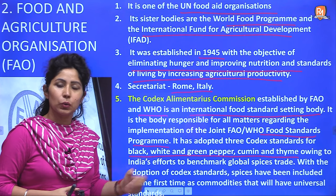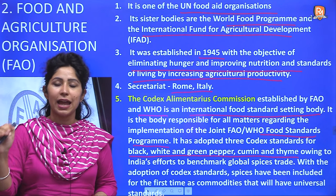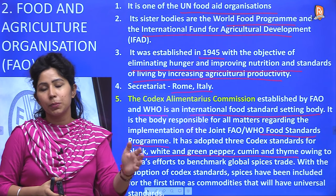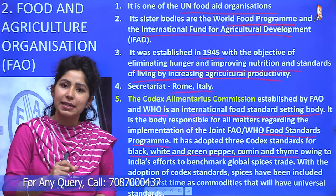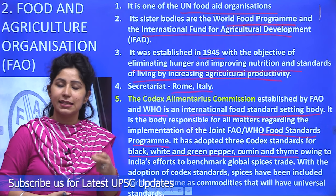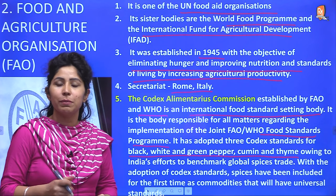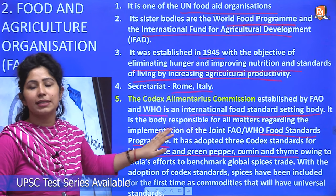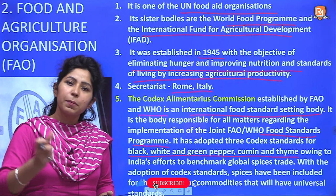The Codex Alimentarius Commission sets standards so that we can categorize food products and compare their quality. Recently, India nudged this commission to set up basic standards for spices like green pepper, white pepper, black pepper, cumin, and thyme — because India produces the highest quality of these spices. Once India gets a standard rating from the Codex Alimentarius Commission, its products perform better on the international market and are more likely to be purchased globally.